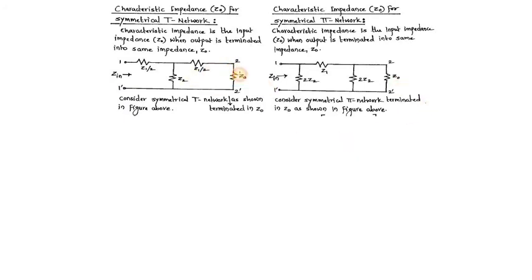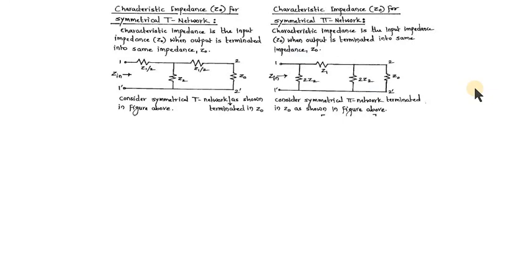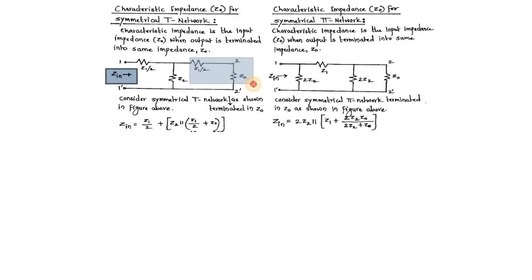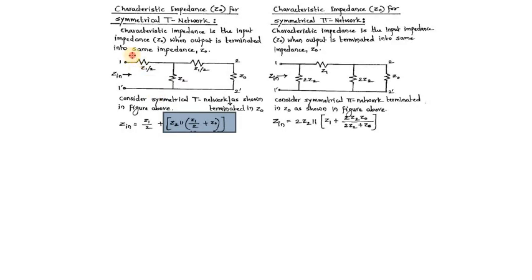We will derive the value of Z0 for a given T network in terms of its inherent elements Z1 and Z2. Similarly, I will derive an expression for Z0 in terms of the inherent elements Z1 and Z2 for the pi network. For the derivation, the first step is to write Zin. Zin can be found as follows: Z1 by 2 and Z0 are in series, so they are added, and then this sum is in parallel with Z2, and then the remaining Z1 by 2 is added in series.